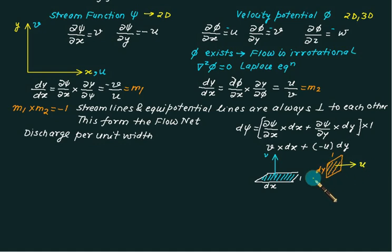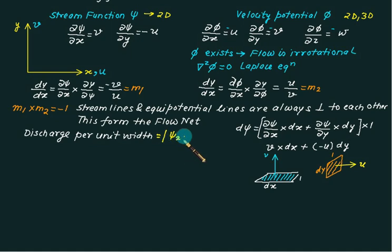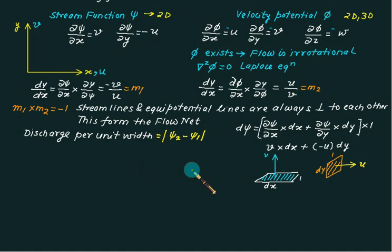Whenever you need to calculate discharge per unit width, simply take the absolute value of ψ₂ minus ψ₁ — that is, the difference of stream functions at two points (final minus initial), always taking the absolute value.